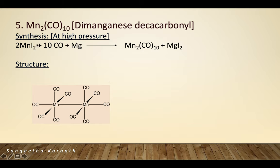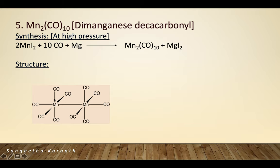Fifth: Dimanganese decacarbonyl, Mn2(CO)10. Synthesis is carried out at high pressure in the presence of magnesium, reacting with carbon monoxide to give the complex. Its structure shows two manganese atoms linked by one metal-metal bond (as calculated earlier), with carbonyl ligands surrounding each manganese in an octahedral fashion — giving overall octahedral geometry.